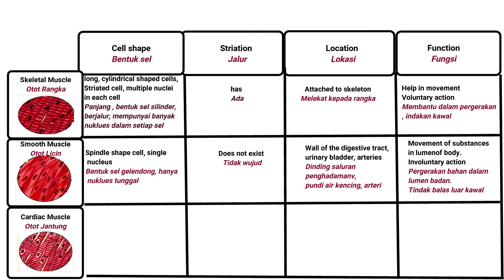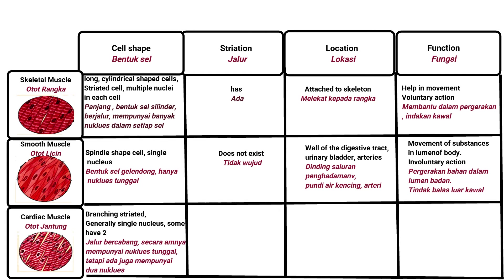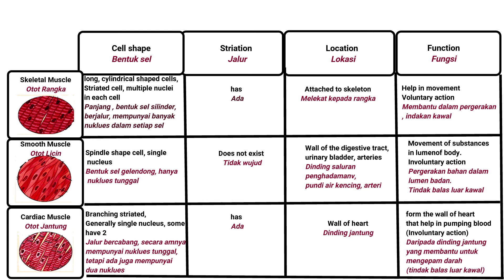Cardiac muscle — cell shape: branching, striated, generally single nucleus, some have two. Location: wall of heart. Function: forms the wall of the heart and helps in pumping blood; involuntary actions.